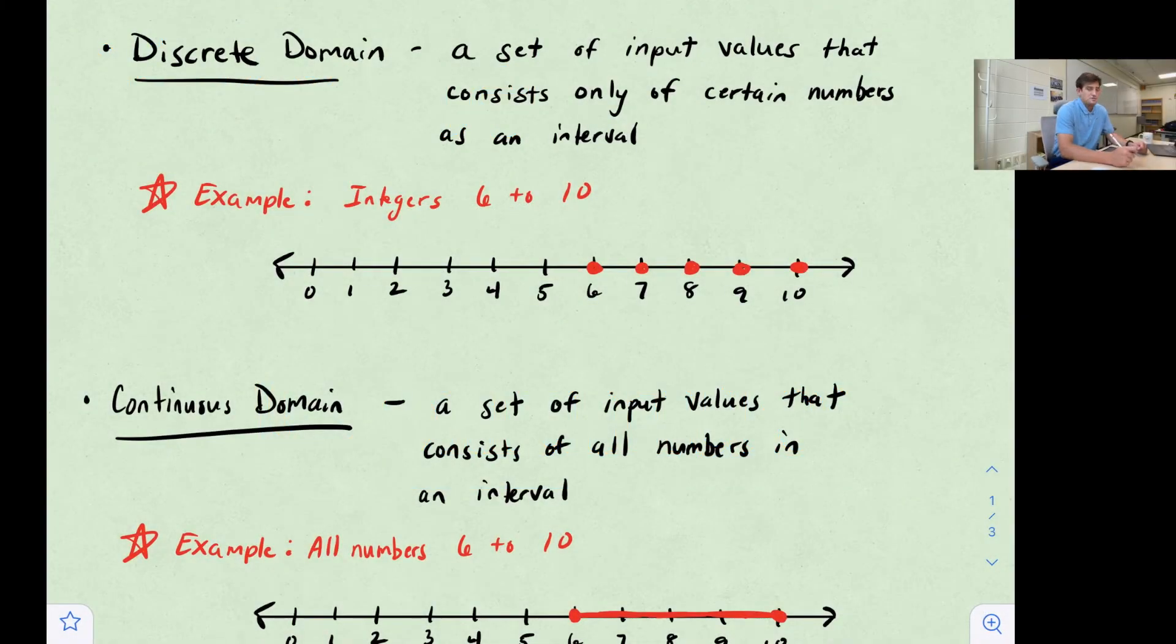Hello everyone. In the previous video we talked about the difference between domain and range. So to kind of go along with that, we want to talk about the difference between a discrete domain and a continuous domain.